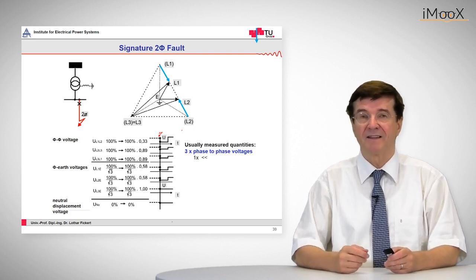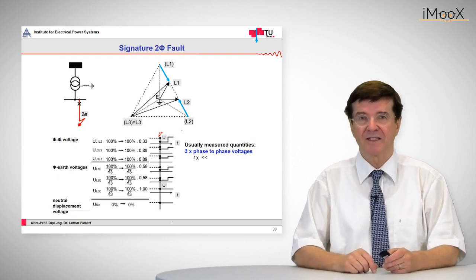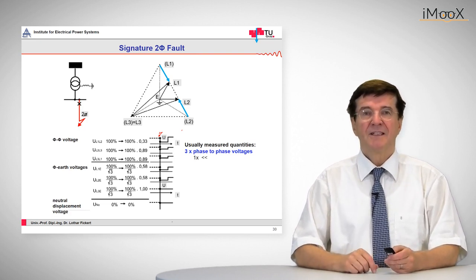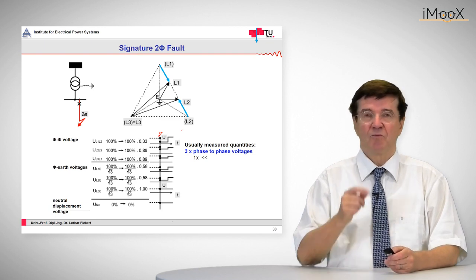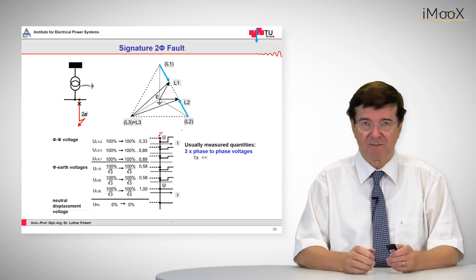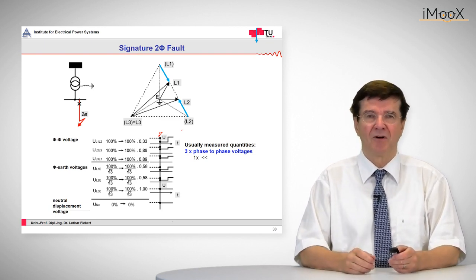For example, take again the first set of traces which is the phase-to-phase voltages. In these phase-to-phase voltages one phase-to-phase voltage collapses, whereas the others remain more or less unchanged.